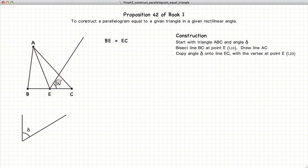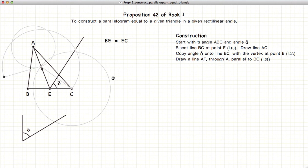What we're going to do next is to draw a line parallel to BC through the point A. We're using the methods described in Proposition 31. And we label the intersection as point F.